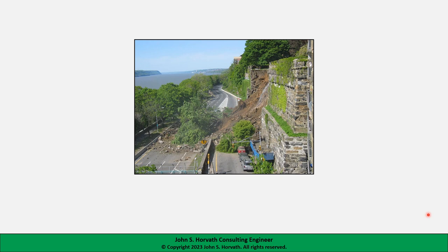A geostructural system is one where the geotechnical components — the ground and groundwater — are the primary components of the system, but there may also be one or more structural elements embedded within the ground or on the ground.